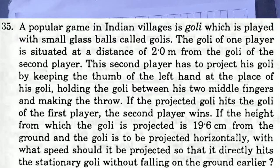A popular game in Indian villages is goalie, which is played with small glass balls called golis. The goli of one player is situated at a distance of 2 meters from the goli of the second player. The second player has to project his goli by keeping the thumb of the left hand at the place of his goli, holding the goli between his two middle fingers and making the throw. If the projected goli hits the goli of the first player, the second player wins. If the height from which the goli is projected is 19.6 cm from the ground and the goli is to be projected horizontally, with what speed should it be projected so that it directly hits the stationary goli without falling on the ground earlier?